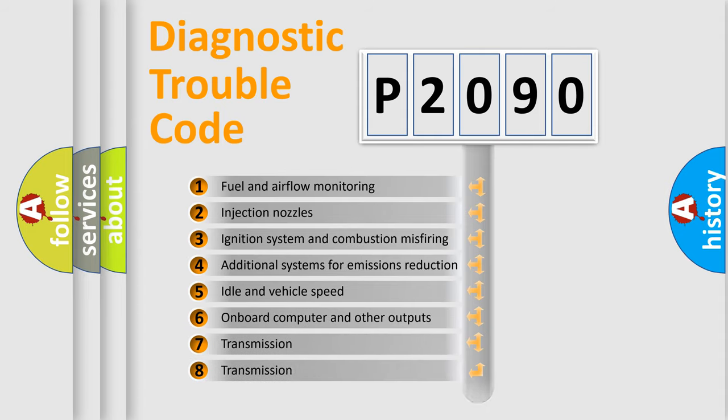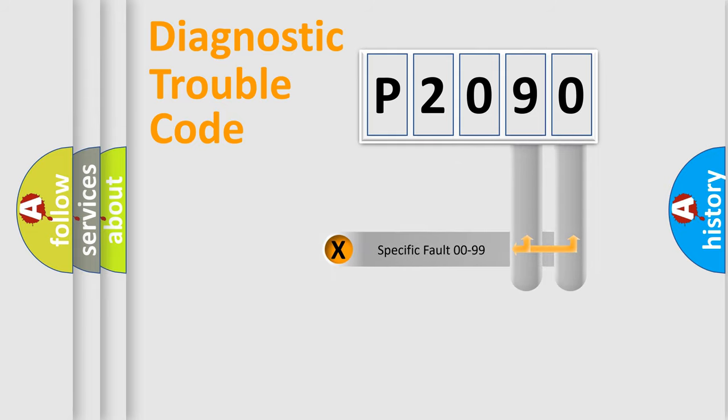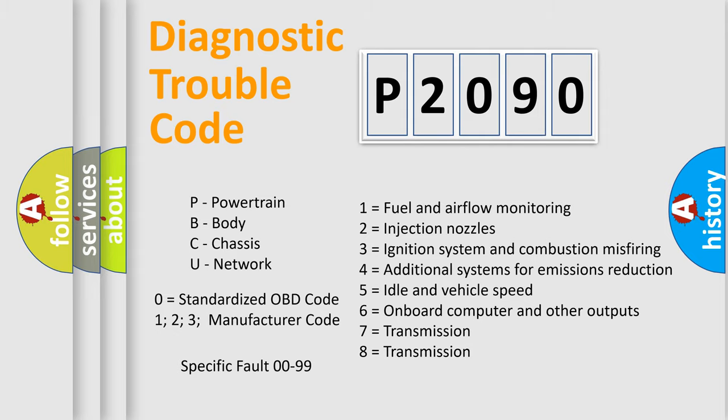The distribution shown is valid only for the standardized DTC code. Only the last two characters define the specific fault of the group. Let's not forget that such a division is valid only if the other character code is expressed by the number zero.